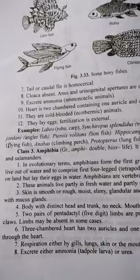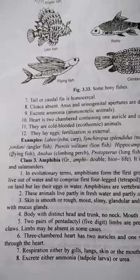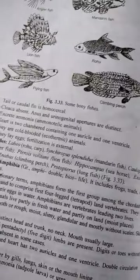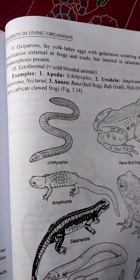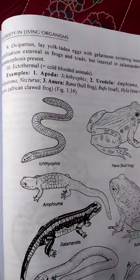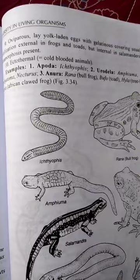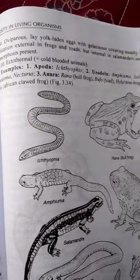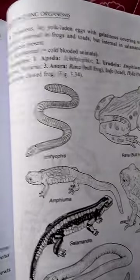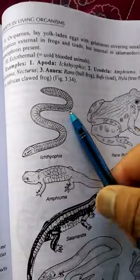They are ammonotelic — that is, they excrete nitrogenous waste usually in the form of ammonia. They lay eggs and are oviparous. They are ectothermal, meaning they are cold-blooded animals.